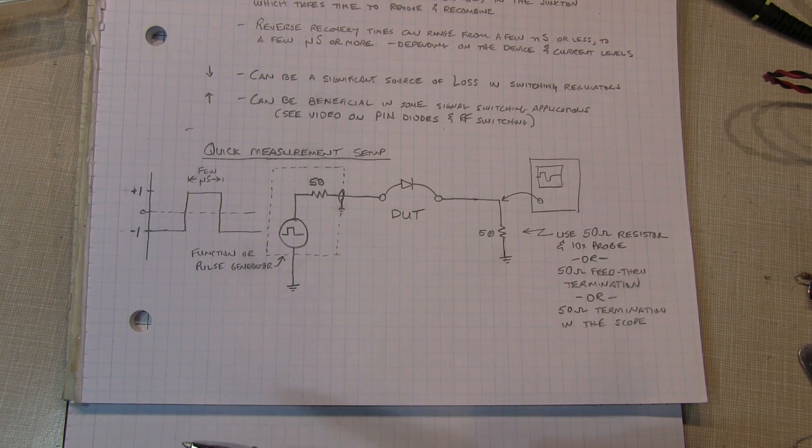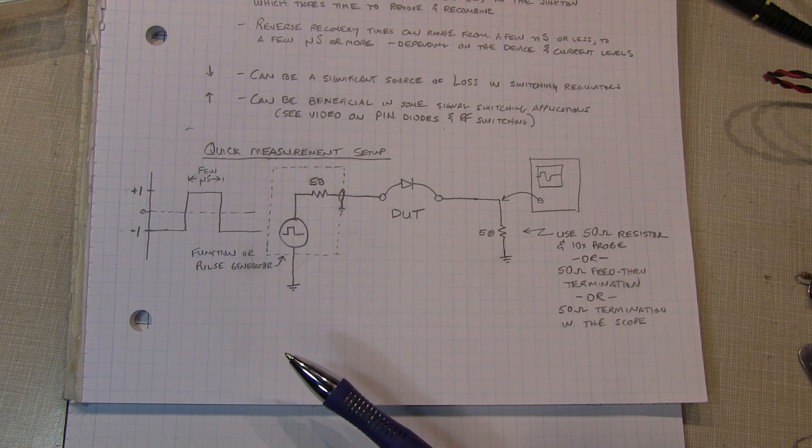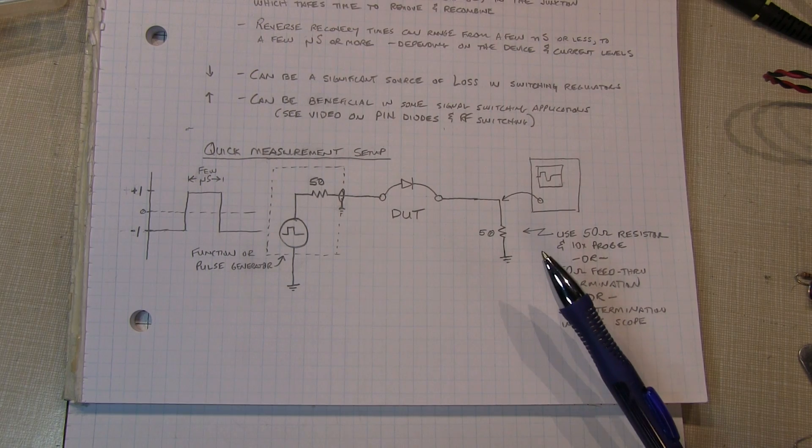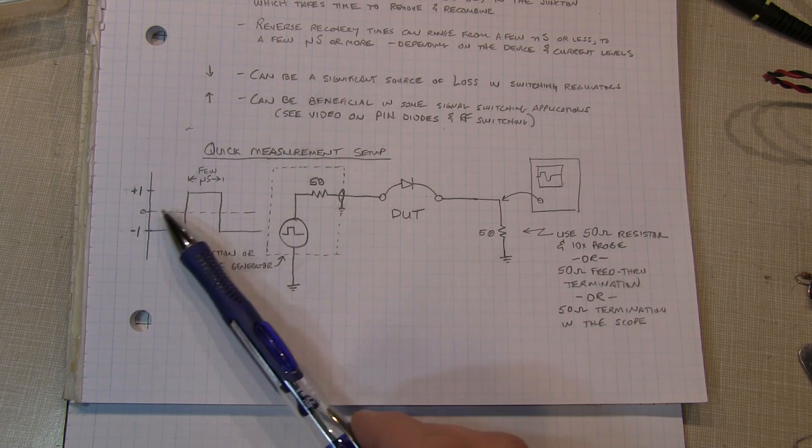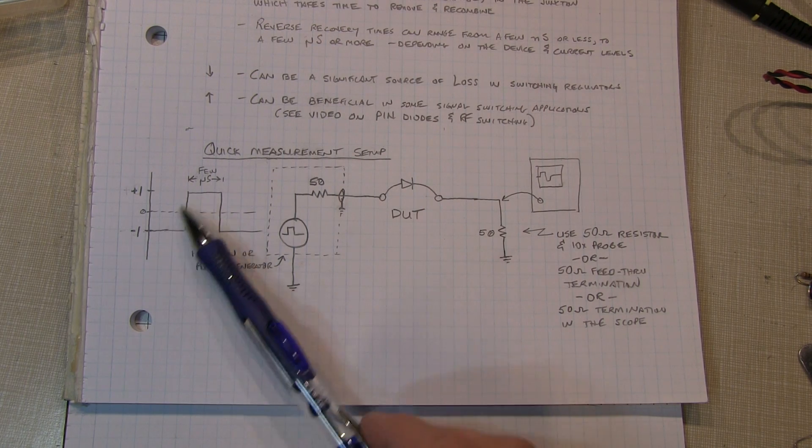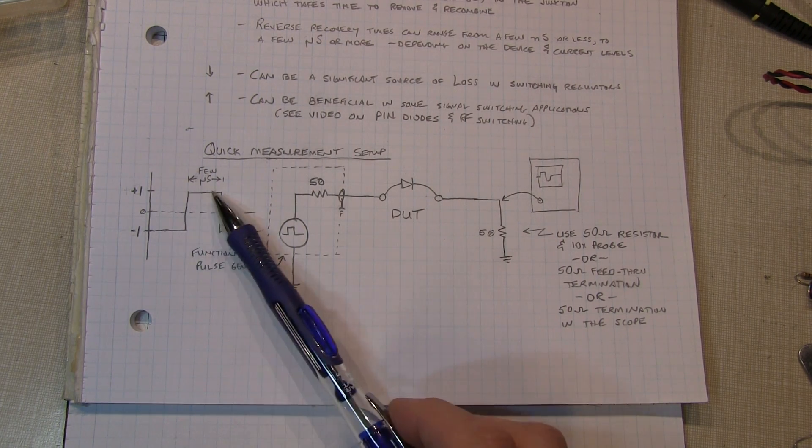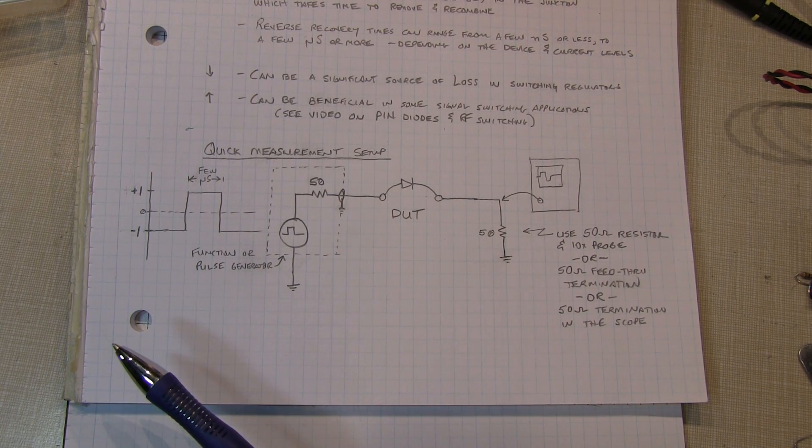Now as I mentioned, different manufacturers will have different test setups for measuring the reverse recovery time. I'm using a very simple setup here just to show the effect. I've got a pulse generator that's set up to output a pulse that goes from a negative voltage, starting off at say minus one, going to plus one, and then going back to minus one. I've got it set up for just a few microseconds of width.